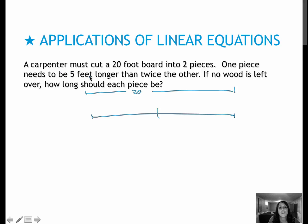One piece is 5 feet longer than twice the other. If one of them is x, the other one needs to be 5 feet longer than twice the other. Twice the other would be 2x, and 5 feet longer would be 2x plus 5.